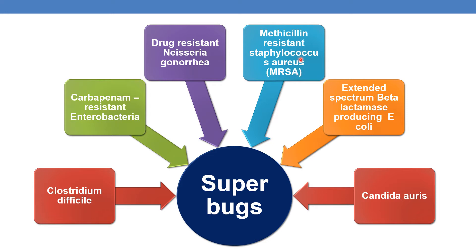MRSA will be discussed in detail in separate sessions. Other examples are extended spectrum beta-lactamase producing E. coli (ESBL producing E. coli) and Candida auris. These are some of the examples of superbugs.